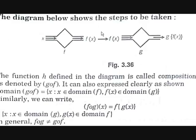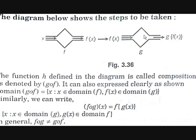Now the diagram will show you this properly. First you input the variable x. It undergoes the function f and gives the value f of x. Then you input f of x and it undergoes the function g and you get g of f of x. The function h defined in this diagram is called the composition of f and g.